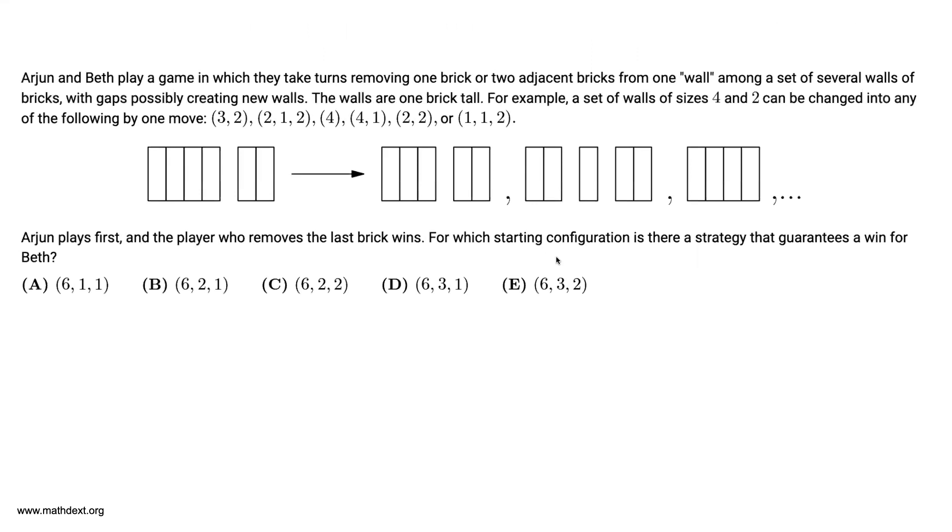So we have this game and Arjun and Beth are playing it. And we want to find which starting configuration has a strategy that guarantees a win for Beth. Let's look at one of these answer choices just to get a sense about what we're doing here. We have this 6-1-1 block, which looks something like this.